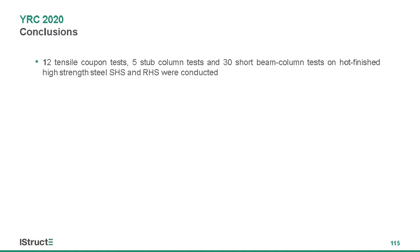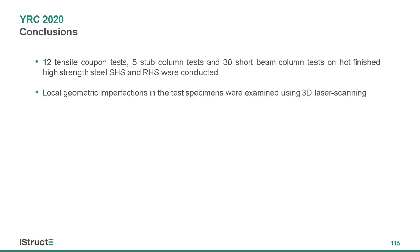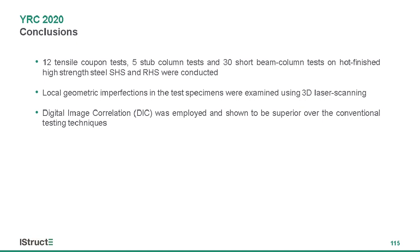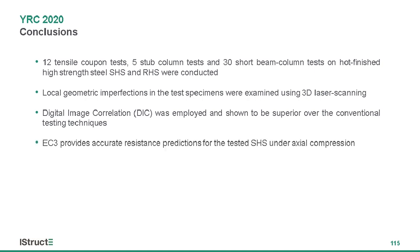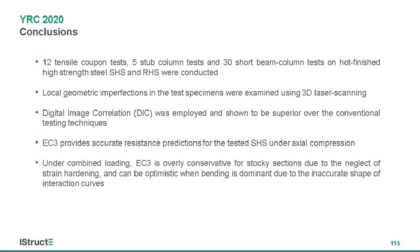To conclude, we have conducted 12 tensile coupon tests, 5 stub column tests, and 30 short beam column tests on hot-finished high-strength steel SHS and RHS specimens. We measured local imperfection distributions in all test specimens using 3D laser scanning. We used digital image correlation to monitor the strain and deformation fields during the tests, and its advantages are clearly demonstrated. Eurocode 3 provides accurate resistance predictions under axial compression, but for combined loading there is room for improvement in exploiting strain hardening and improving the shape of the interaction curves.